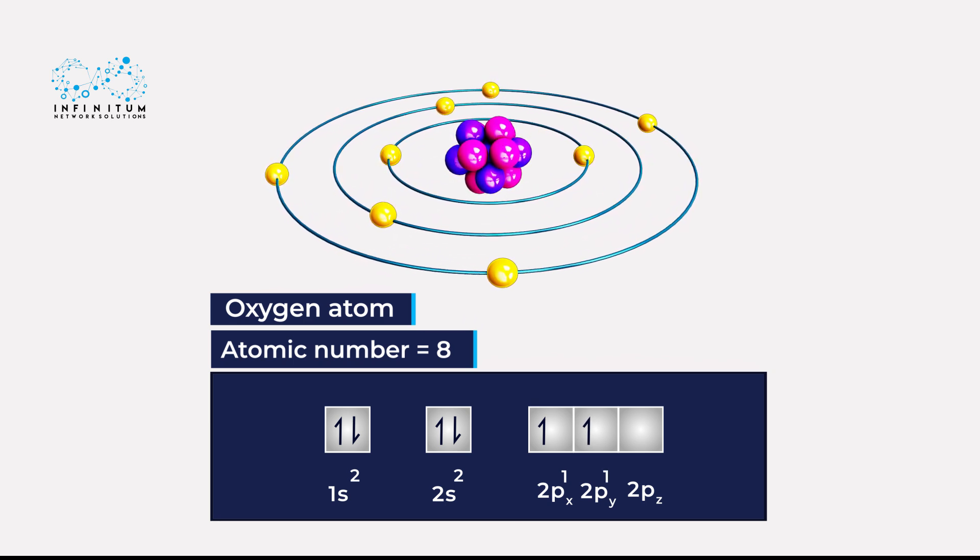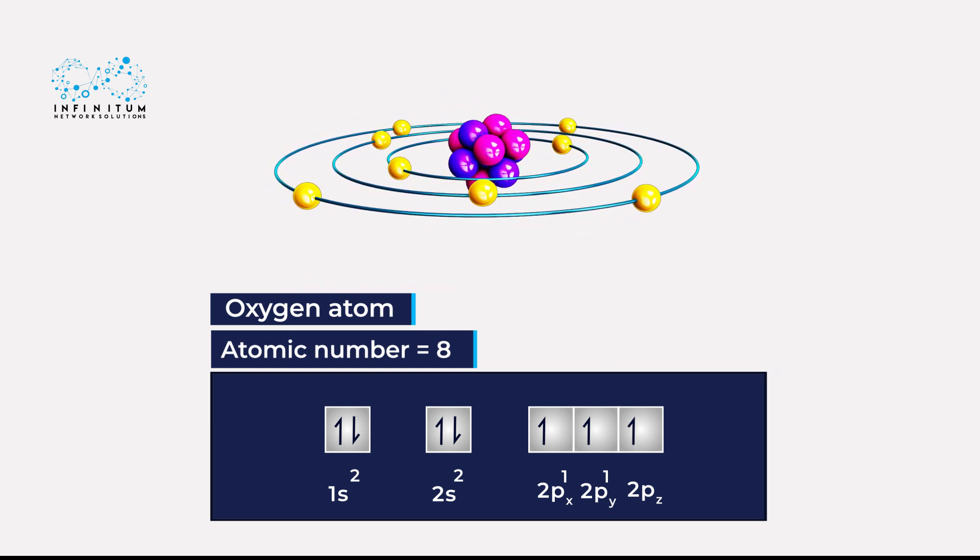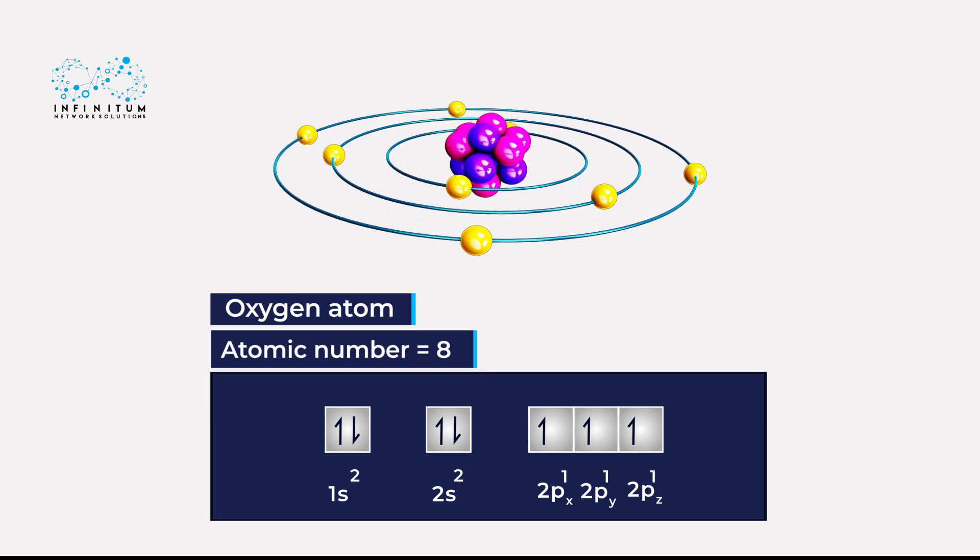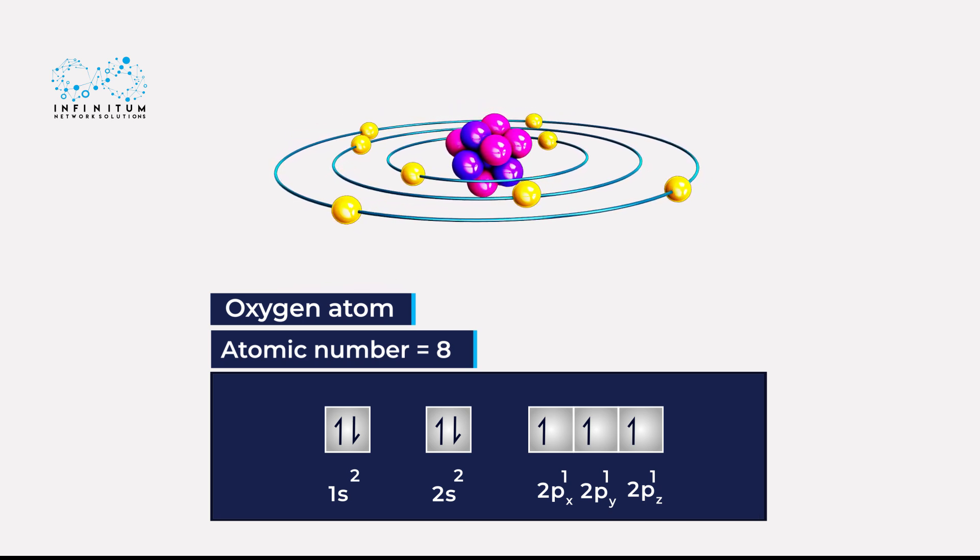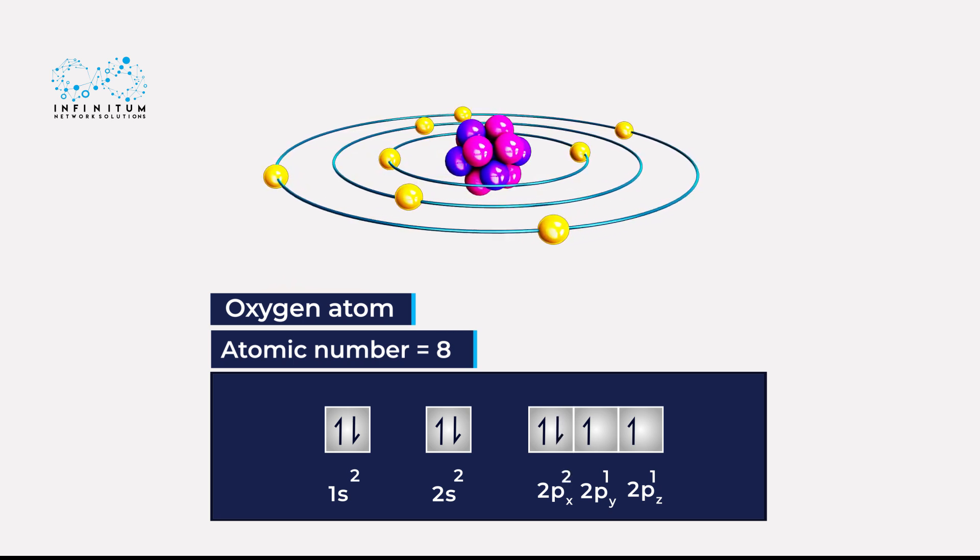Since 2pz is a degenerate orbital, the seventh electron goes into 2pz instead of pairing up with the electron in 2px or 2py. Now, since all three suborbitals have one electron each, the eighth electron can pair with any of the three electrons in 2px, 2py, and 2pz.